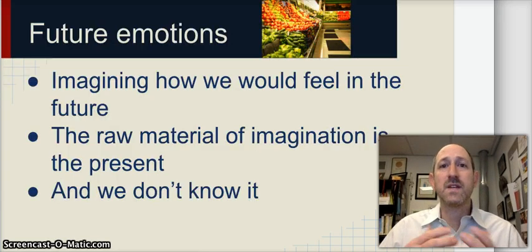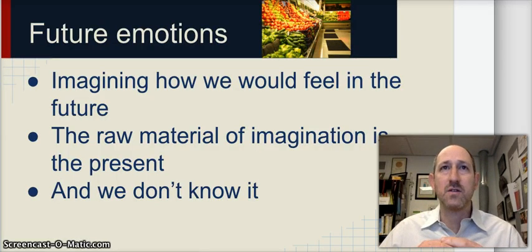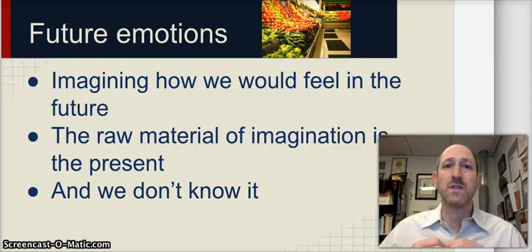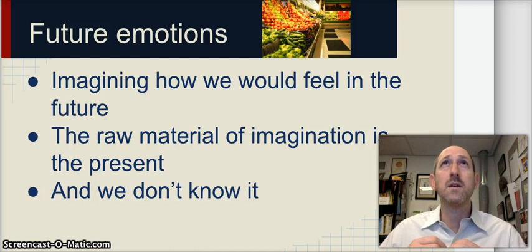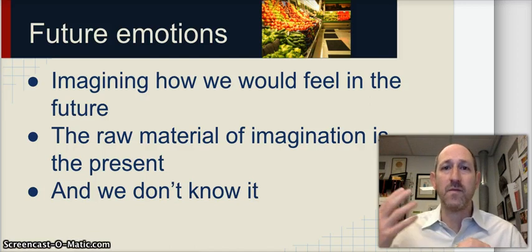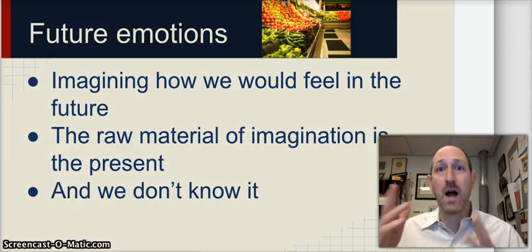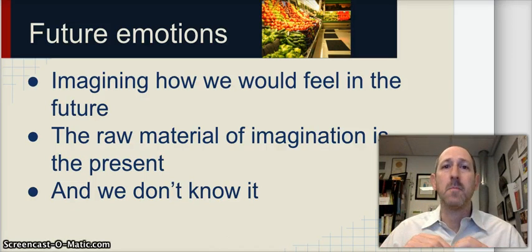So we're still dealing, just like we were in the last section, on the failures of imagination. When we think about decisions that we want to make about the future, we have to use our imagination to make those decisions. And now we're dealing with this idea of how do we know or think about how we would feel in the future. So again, I'm imagining two options that I might take. How do I know or guess how each one would feel?